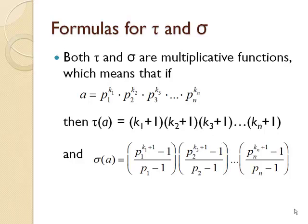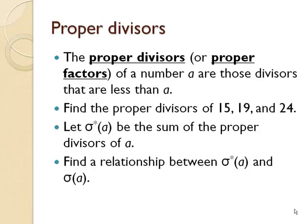The proper divisors or proper factors of a number A are those divisors that are less than the number A. So what I'd like for you to do is find the proper divisors of 15, of 19, and of 24. The proper divisors of 15 are the factors of 15 that are less than 15. So therefore the proper divisors of 15 are 1, 3, and 5. Find those for 19 and 24.